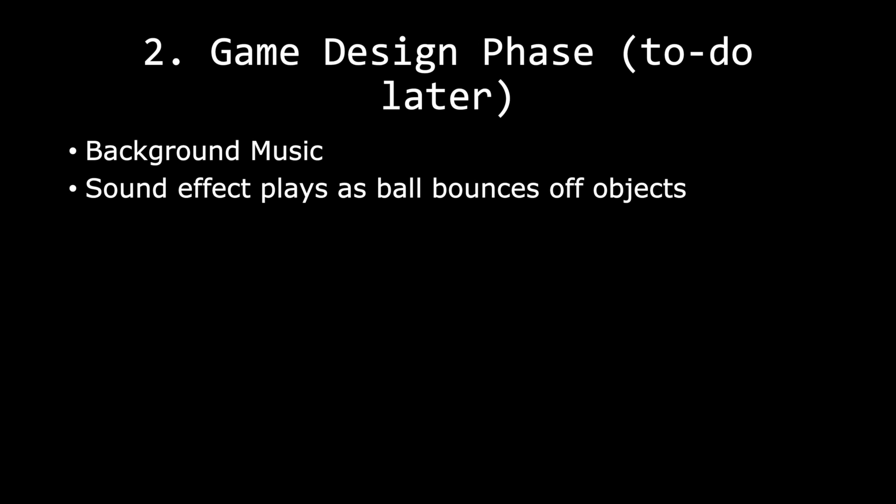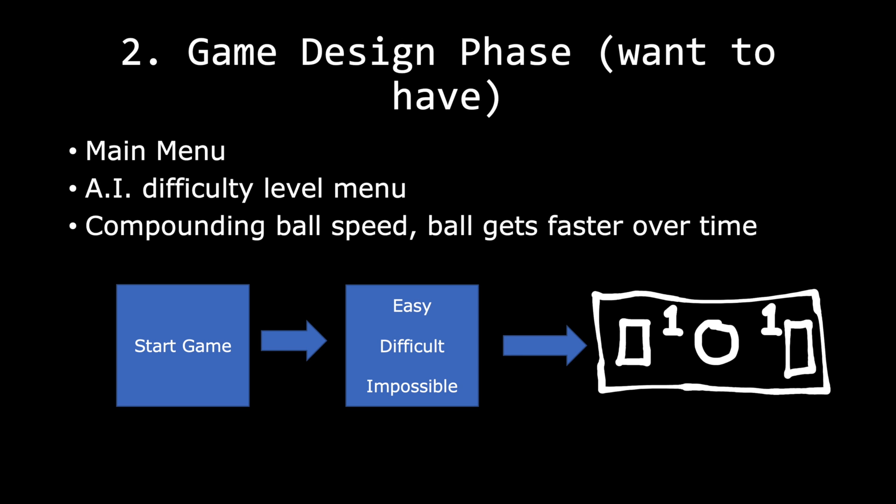On my to-do list, I have background music and sound effects — things I want to do towards the end of making the game. Lastly, I have a want-to-have section: things my game doesn't need, but I'll do them if I have time. In this case, I have three things: a main menu with a simple start game button, an AI difficulty level menu where you can choose the paddle to chase the ball slowly, faster, or at the same Y coordinate as the ball (which is impossible), and maybe a compounding ball speed where the ball gets faster over time. Nothing is set in stone — we can always revisit our phases to change things as we code along.